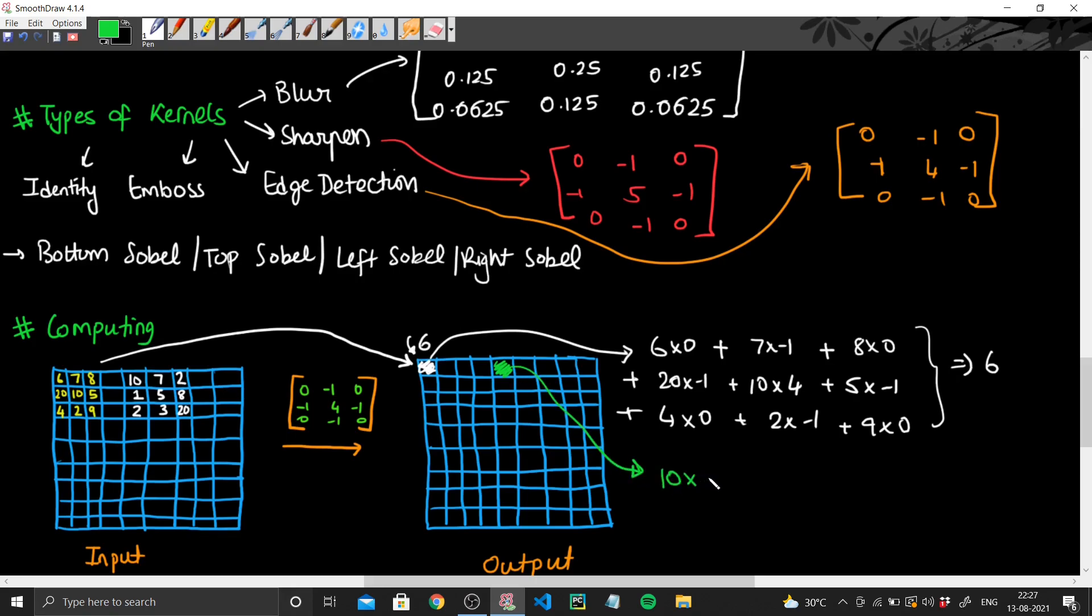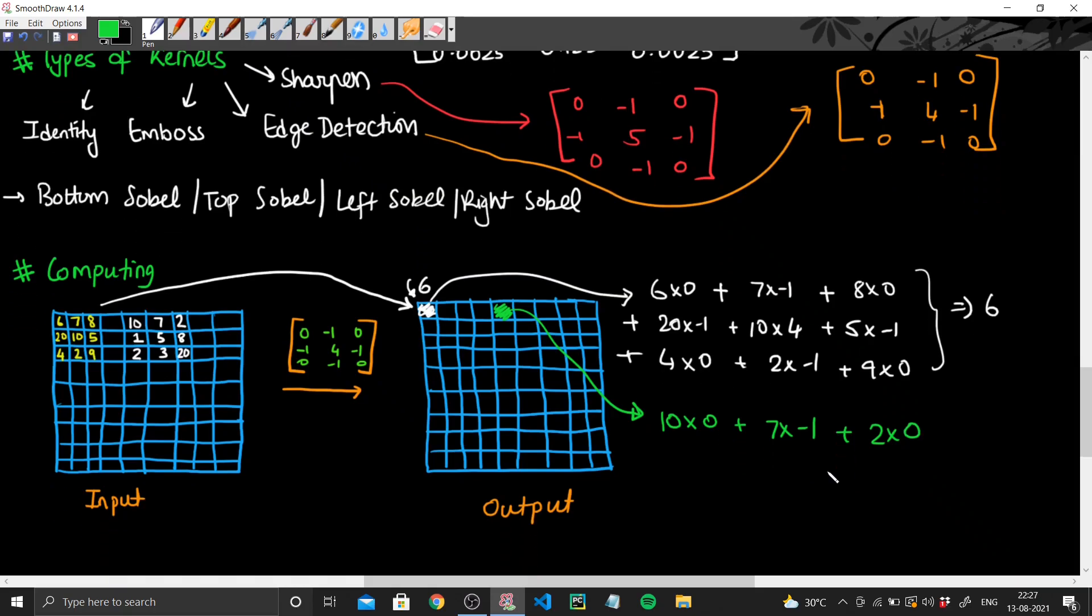This pixel is basically 10 times 0, plus 7 times minus 1, plus 2 times 0, plus 1 times minus 1, plus 5 times 4, plus 8 times minus 1, plus 2 times 0, plus 3 times minus 1, plus 20 times 0. I'm using the sharpen kernel as it is. Oh sorry, we're using the edge detection one, my bad.